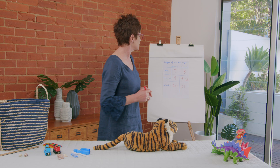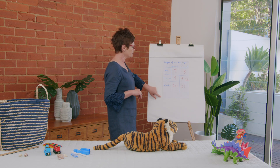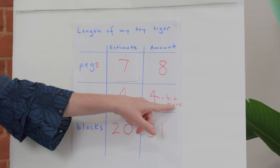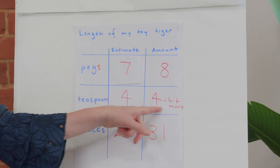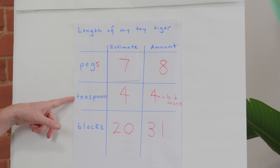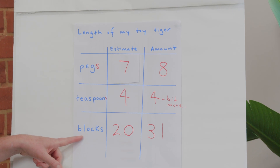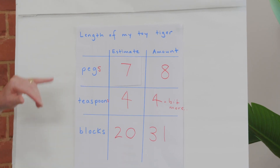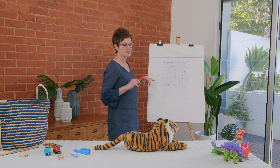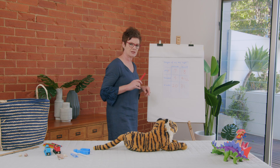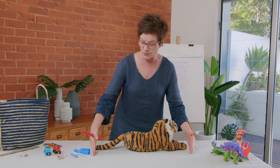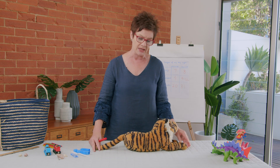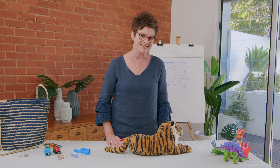Now that I've used all three informal units to measure, which was the most efficient — the best way to measure Tommy Tiger? I'm not sure about the teaspoon measurement because 'a bit more' isn't precise, and the blocks took a long time with a less accurate estimate. I believe the best way to measure Tommy Tiger was with pegs — eight pegs, an efficient and accurate method.